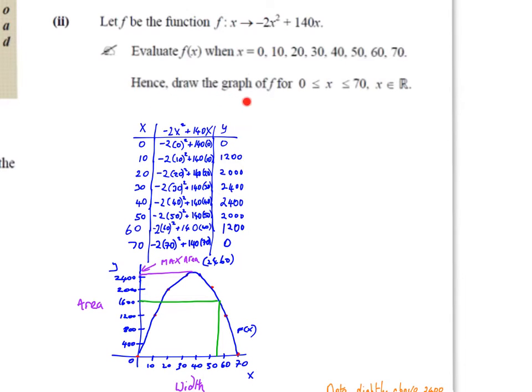It says hence draw the graph of f for 0 ≤ x ≤ 70, where x is an element of the real numbers. So we draw our table: here we have the x values from 0 up to 70, and we have the formula -2x² + 140x. We fill in the x values and work out the y values.